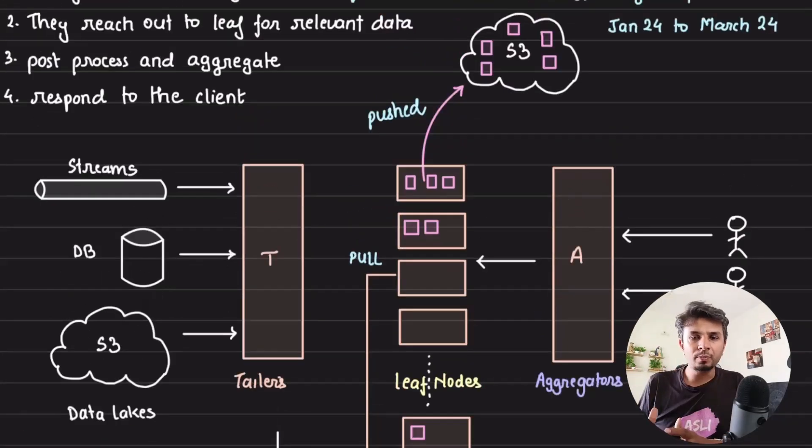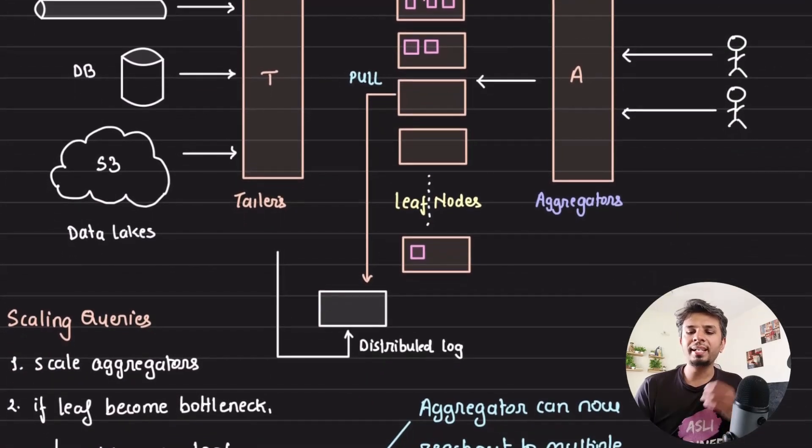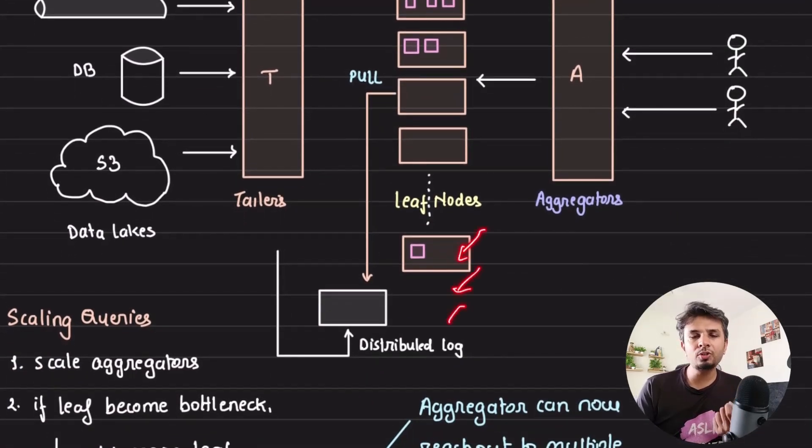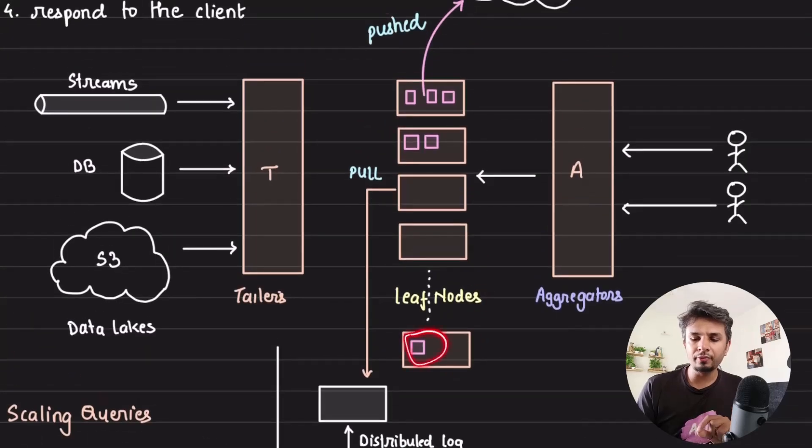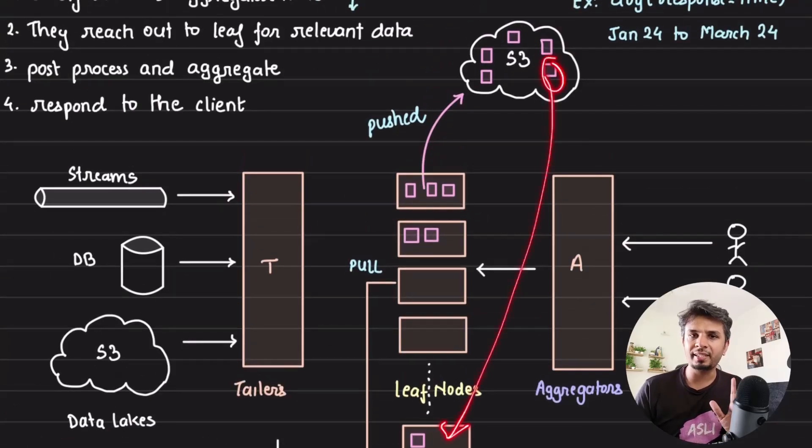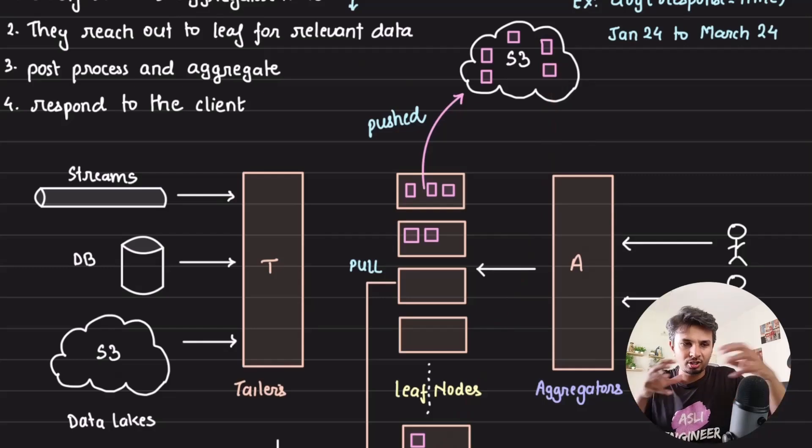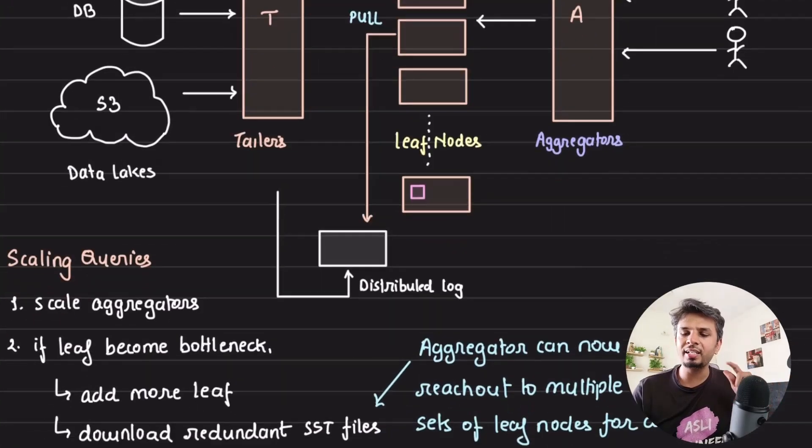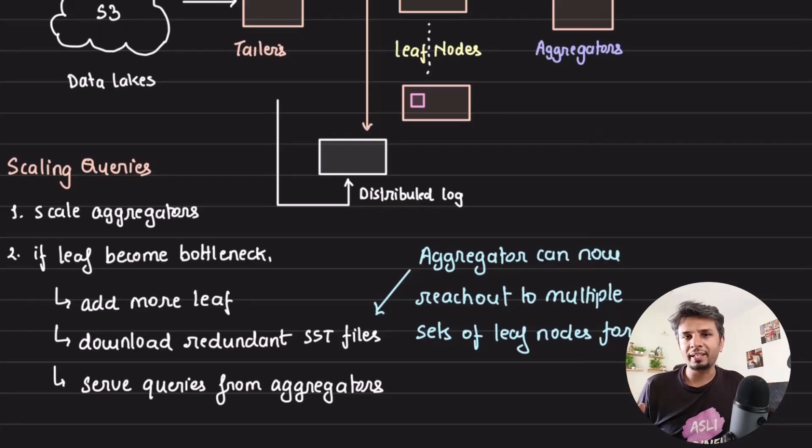So in case there's a rise in your query volume and your leaf nodes start to become a bottleneck, what Rockset does is easily add more leaf nodes and allow those leaf nodes to download the SST files from S3, making S3 files redundant across your leaf layer. Now your aggregators can reach out to the newly created leaf nodes to fire the query like it always used to do. This is how you can also scale your queries coming into your system with ease. There's no bottleneck. Your entire system is now horizontally scalable with these three distinct layers: aggregator, leaf, and tailor.